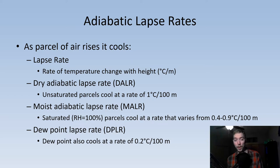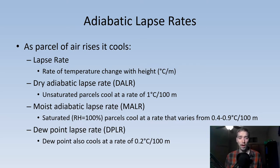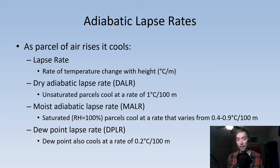We also have the dew point lapse rate (DPLR). While we held dew point as a constant back in Geography 104, it actually cools at a rate of about 0.2 degrees Celsius for every 100 meters. We need to take that into account when looking at things like orographic lifting where air is forced up and over a boundary, because the dew point changes just like the moist and dry adiabatic lapse rates do.